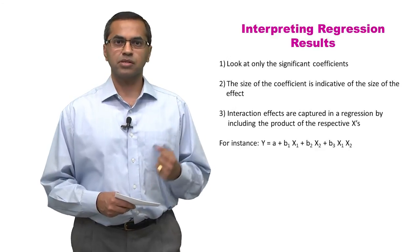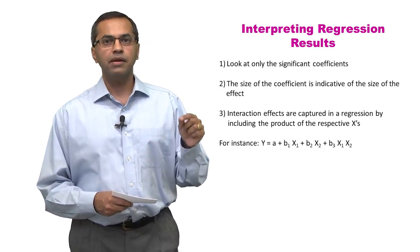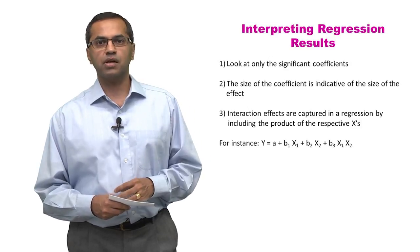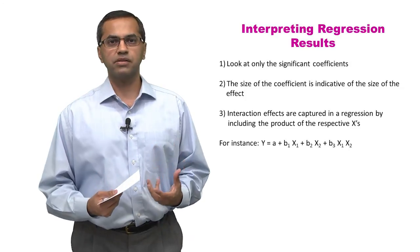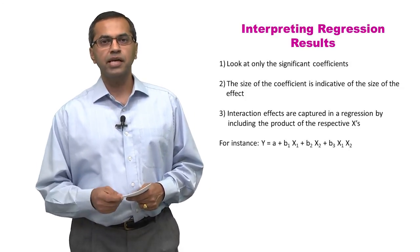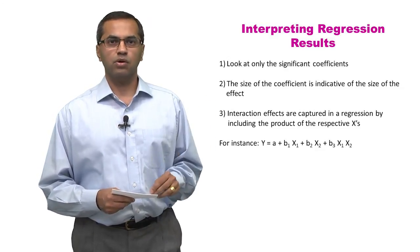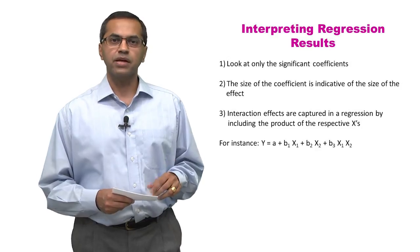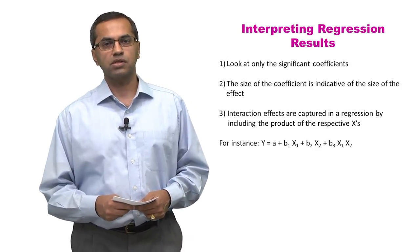Every time you run a regression model, the first thing to keep in mind is that if the model shows you that certain coefficients are not statistically significant, you need not consider them in your interpretation of the results. When you read a paper, you will typically find that statistically significant coefficients have an asterisk or a star marked next to them. The ones that are not significant do not have an asterisk or a star.